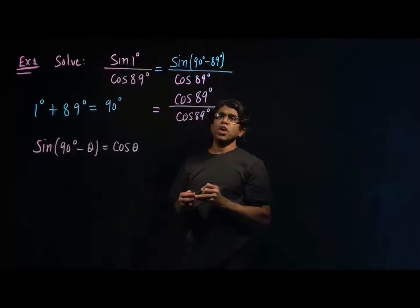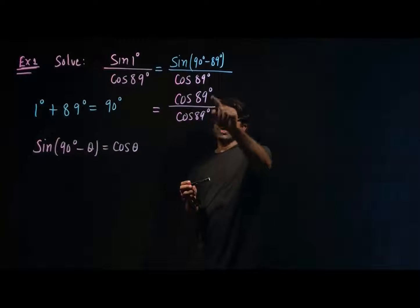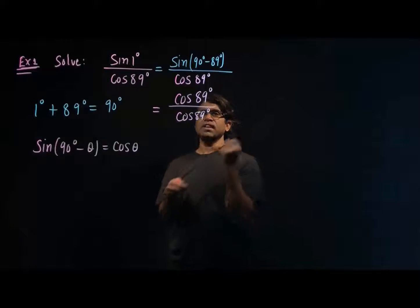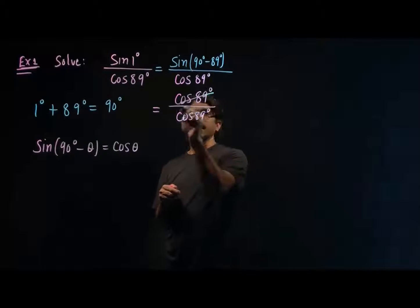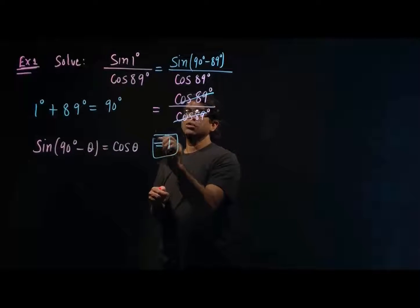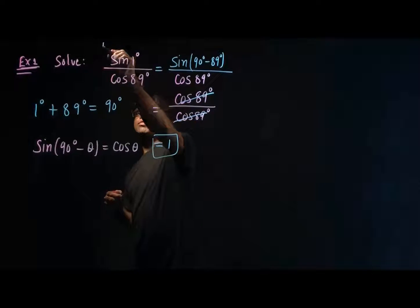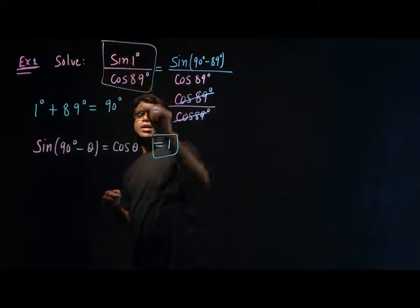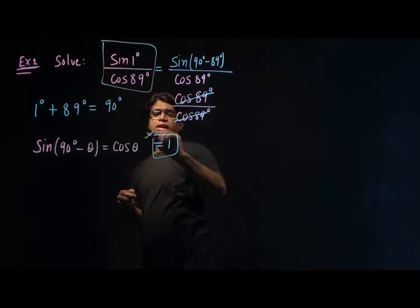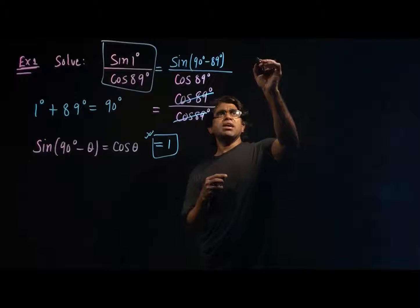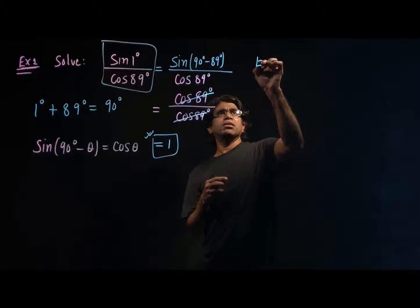Now we can see the numerator and denominator are the same value — cosine 89 degrees — so I can cancel them out and get the value of one. So the answer to this first example is one. Now let's talk about another example.